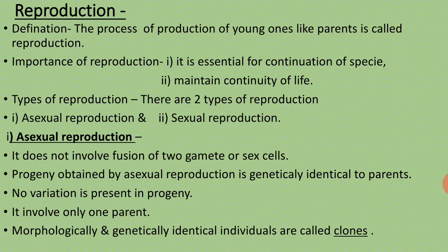Now, the types of reproduction. There are two types of reproduction: asexual reproduction and sexual reproduction. First, asexual reproduction.